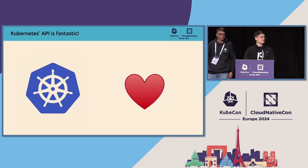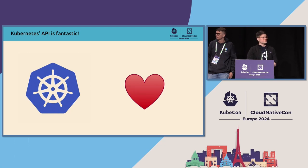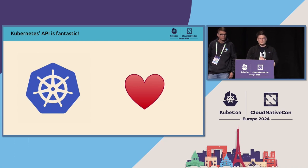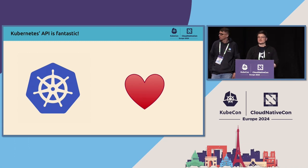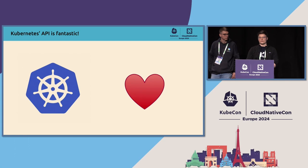First of all, Kubernetes is first and foremost a workload orchestrator for containers. But Kubernetes, through CRDs and operators, has become a fantastic way to provide additional APIs to developers. The Kubernetes API is declarative. It is very easy to understand, clear about inputs and outputs, and has a lot of good patterns like the status sub-resources, making it very easy and consistent to interact with.